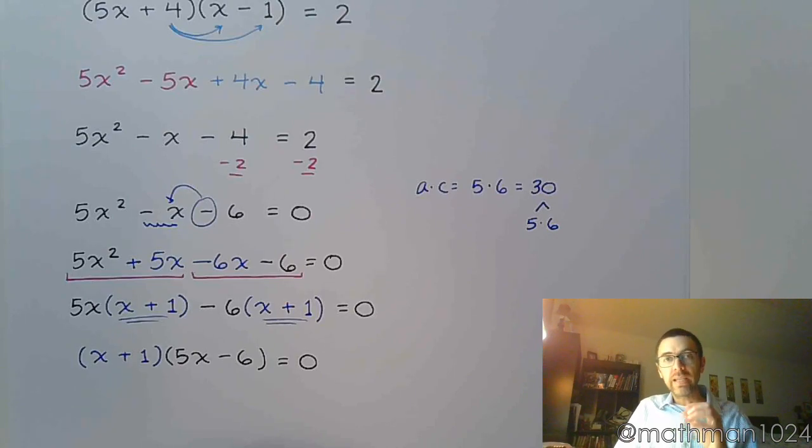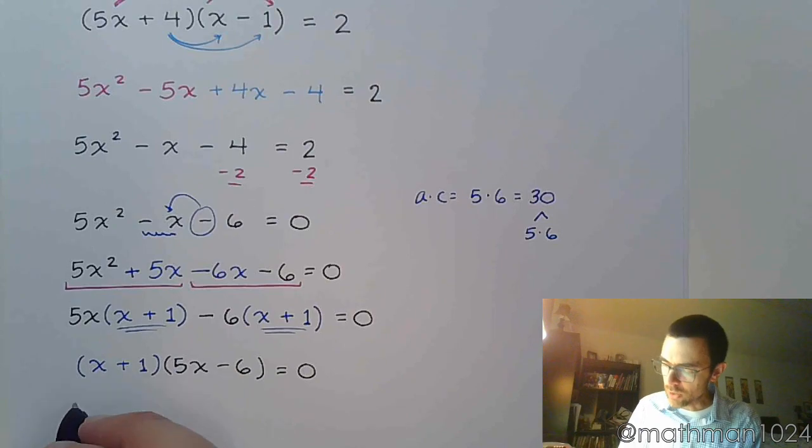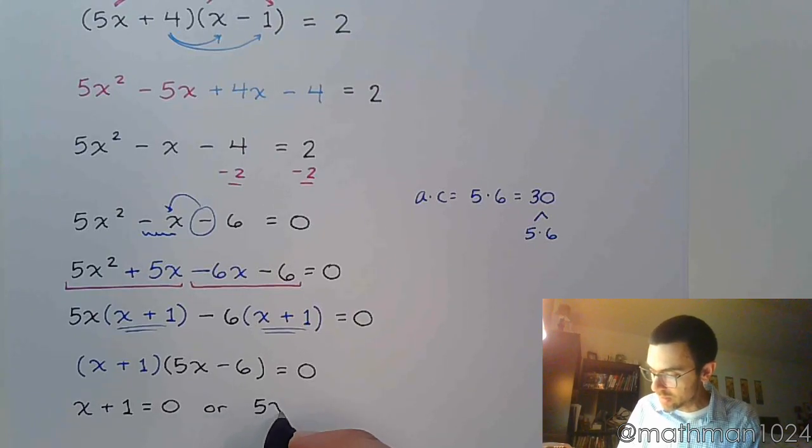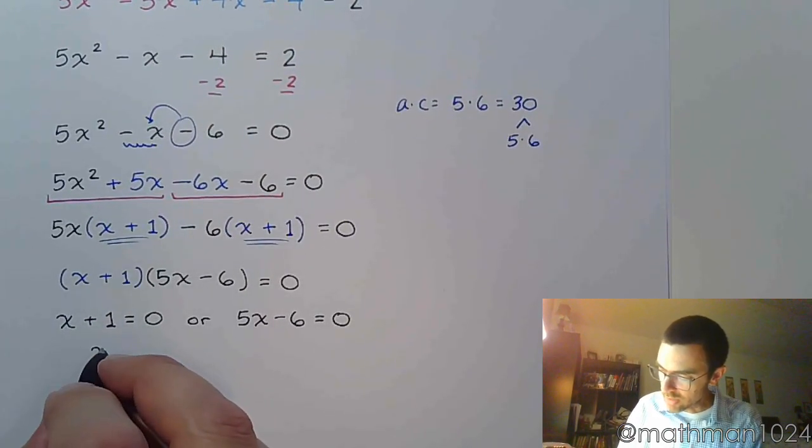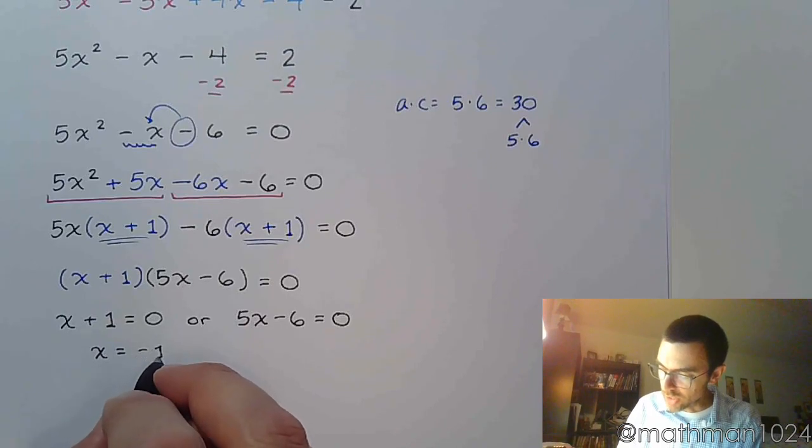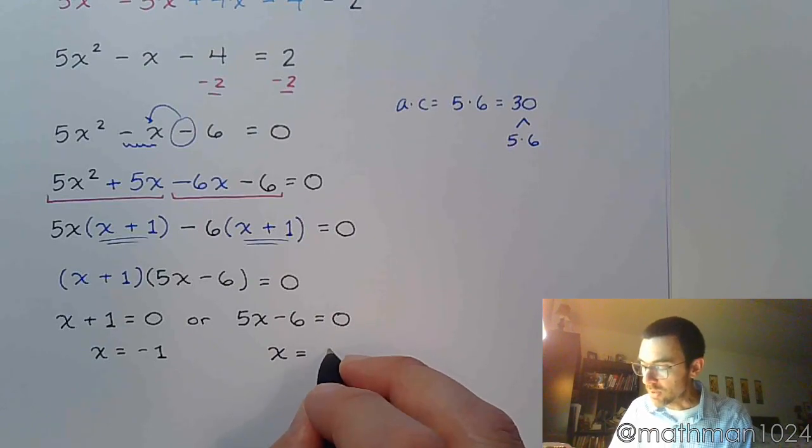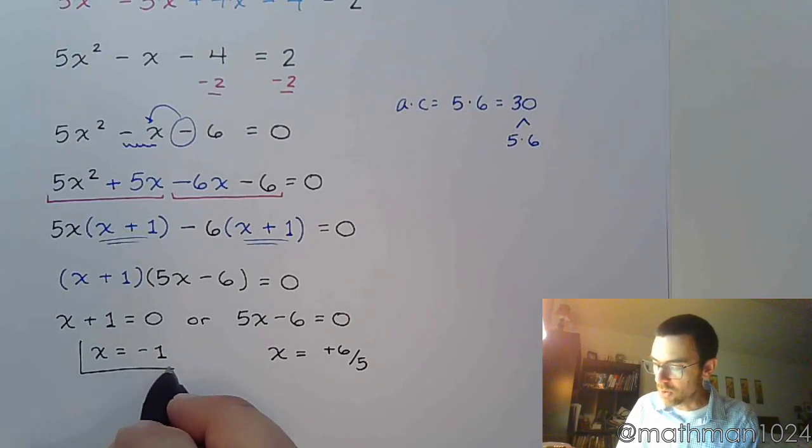And now that we have it factored and equal to 0, not 2 like we had up here, we can now use that zero factor theorem to say x plus 1 is equal to 0, or 5x minus 6 is equal to 0. So these are the two possibilities. We solve each of these. x is equal to negative 1, or x is equal to, talk about the steps, to solve for x, you have to add 6 and divide by 5. So here are your two solutions.